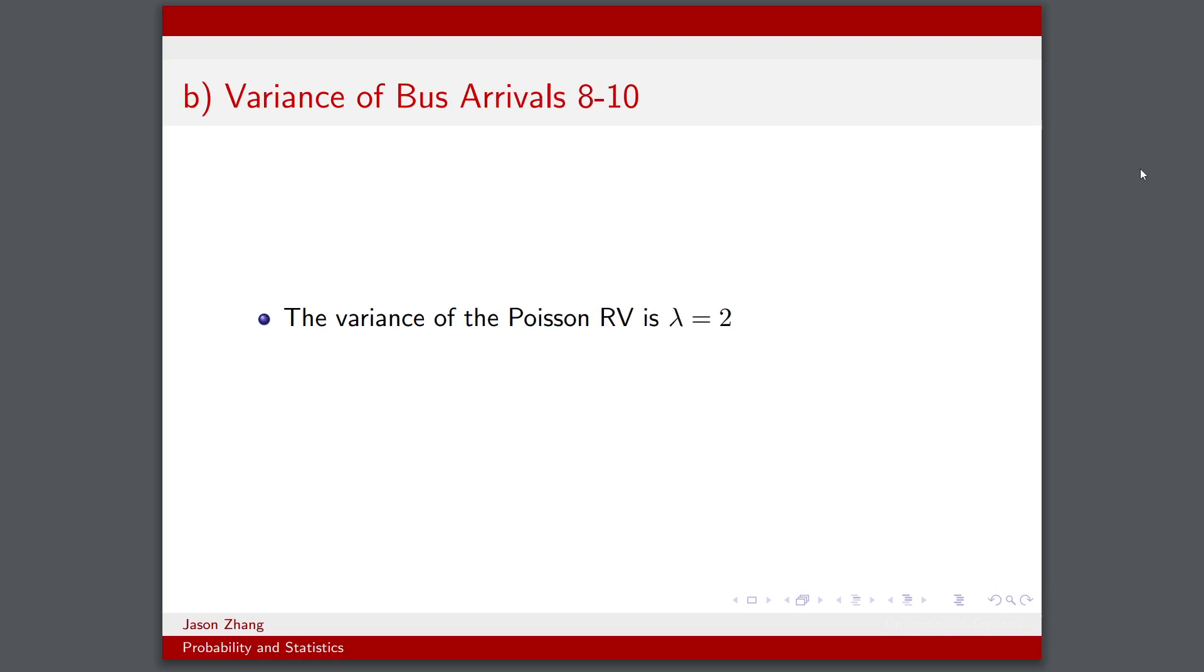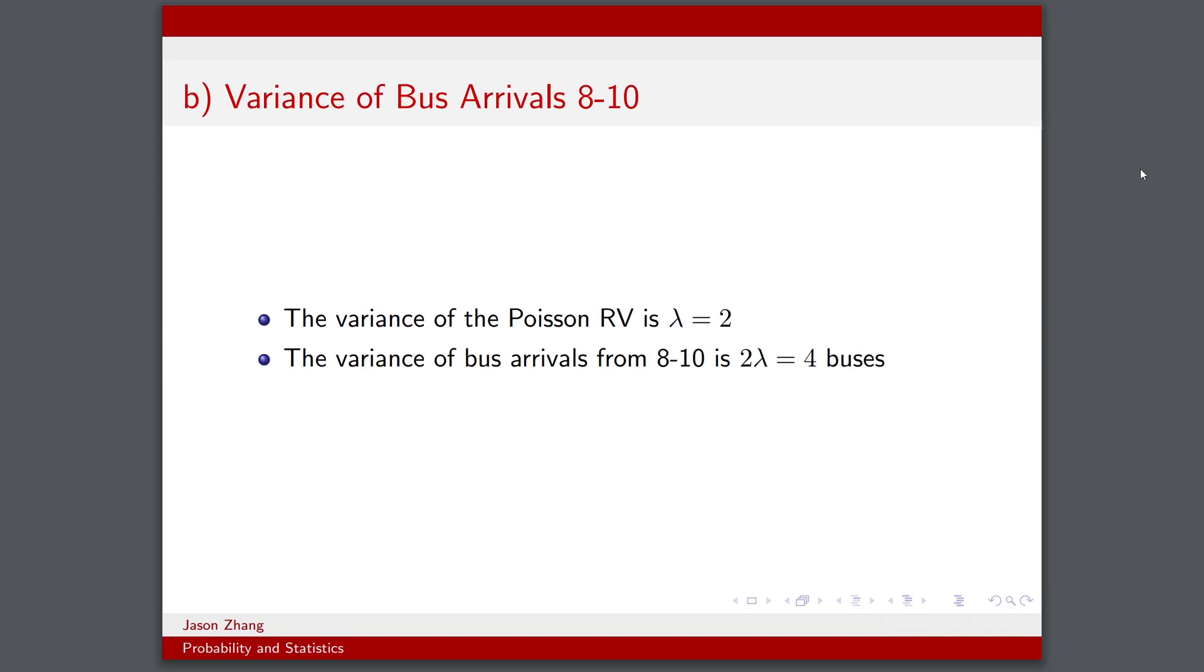Part B, now we need to know the variance. The cool thing about a Poisson random variable is that the variance also happens to be equal to λ. So in this case it would be 2 buses. And because we can treat 8 to 10am as two intervals of 1 hour length each, we can essentially just add the variances for these two independent Poisson random variables. So again we would have the variance being 2λ, which would be 4 buses.